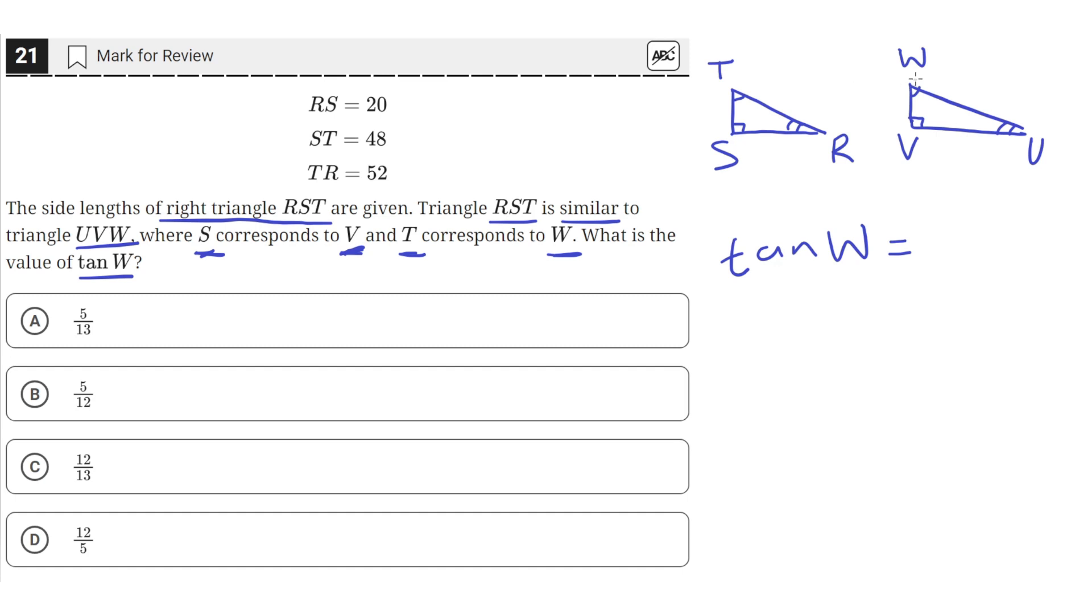So that means the tangent of W, since it's the same angle as angle T, the tangent of W is just equal to the tangent of T, since they are corresponding angles in similar triangles.